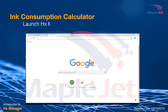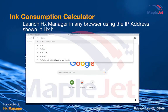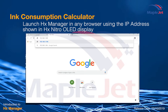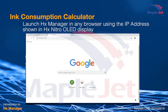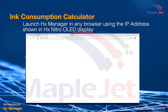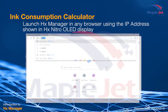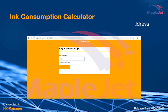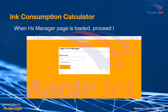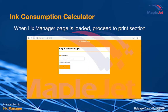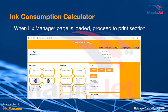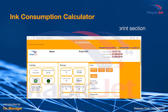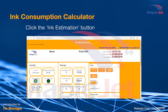Launch HX Manager and enter the IP address of the access point or router found in the OLED display of your printer. When the HX Manager page is loaded, proceed to the print section and click the Ink Estimation button.